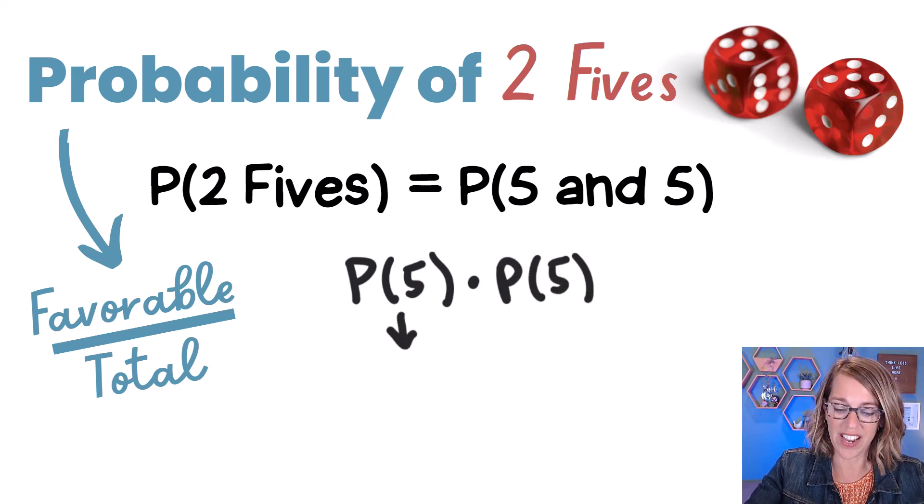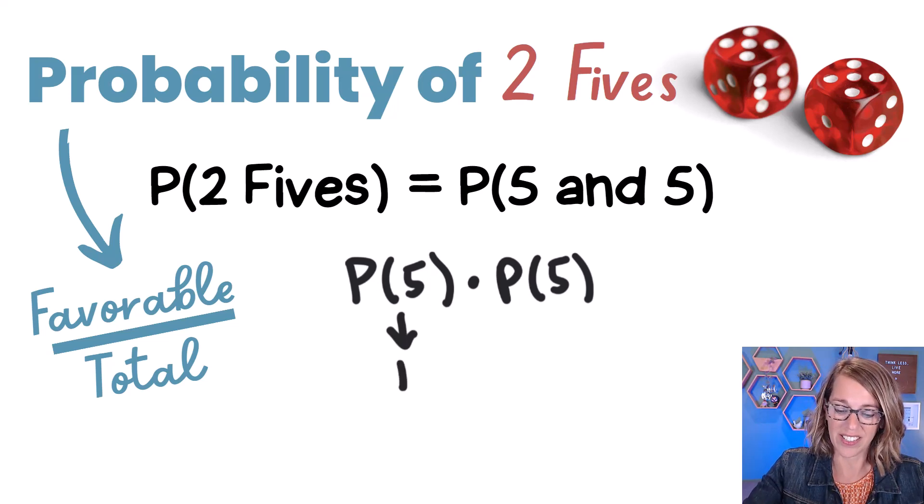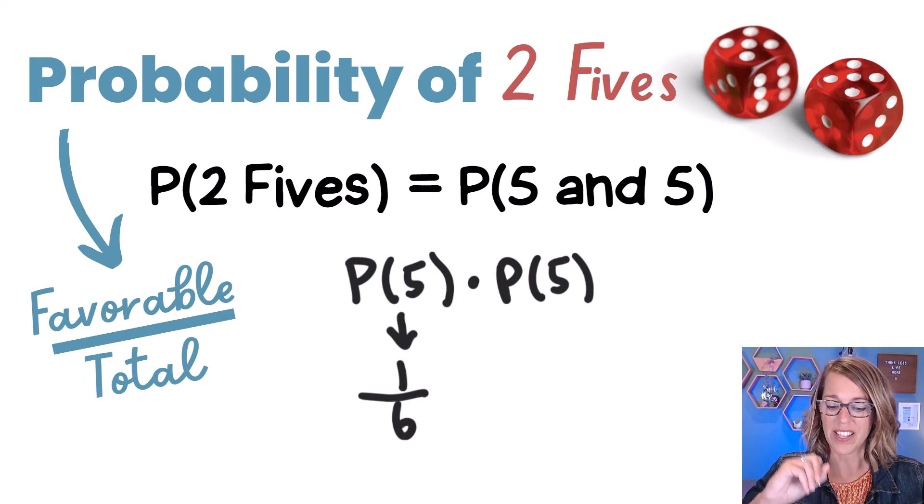Let's go ahead and do that first dice. Now, there's only one five on a dice out of six total numbers on the dice. So the probability of getting that first five is one out of six.